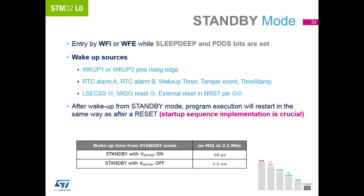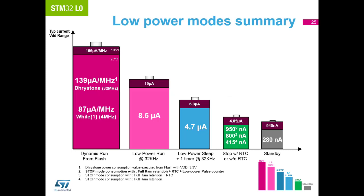The reset pin can also wake the device from any of the low power modes previously mentioned. Here are the typical current consumptions for all the modes we have just discussed. The values at the top section of each battery are for the maximum temperature range of the device. The extra two values in the stop mode battery are showing the current consumption with the RTC running and with the RTC and low power timer running.